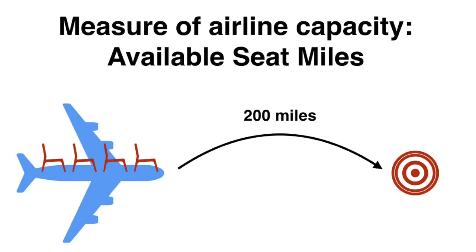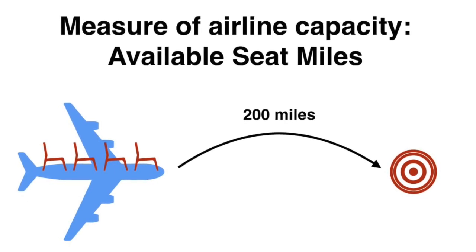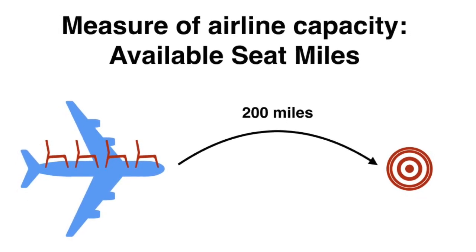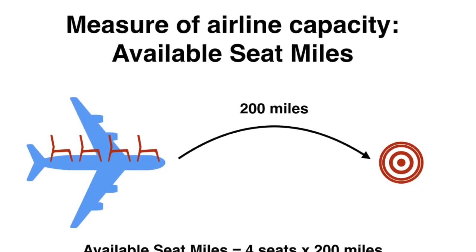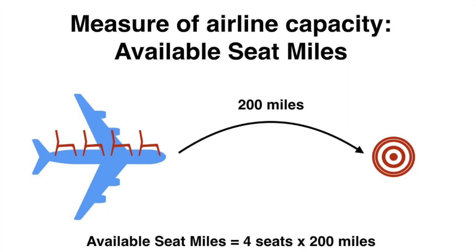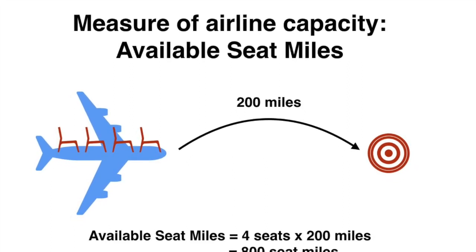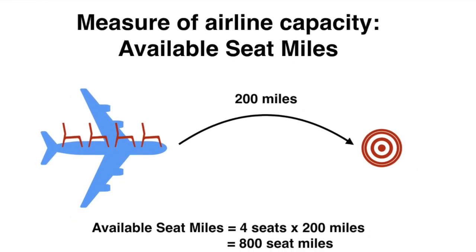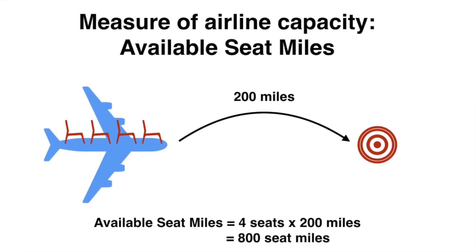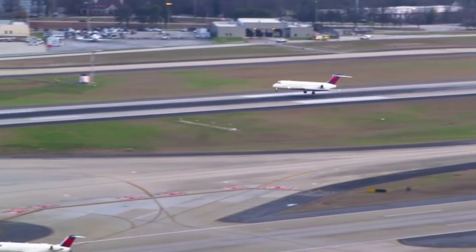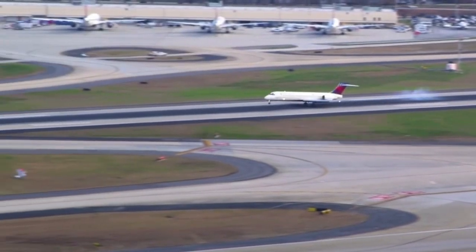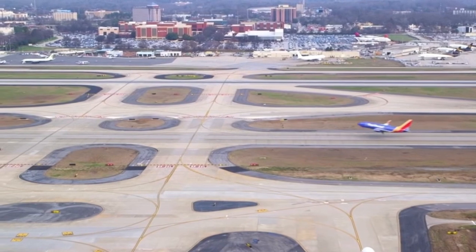So let's look at a simple example. In this example, the airline operates one aircraft with a capacity of 4 seats, and they operate this aircraft between an origin and a destination which is 200 miles apart. This means that the ASM per leg flown is 4 — the available seats — multiplied by 200, which is the distance those seats are flying. Hence the airline has 800 available seat miles per flight leg. Based on the frequency of this route per day and per year, the daily and annual ASMs can be calculated accordingly.